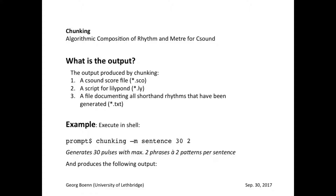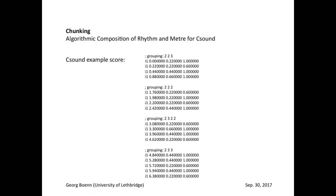Chunking is a command-line application that runs in a shell. It calls its different functions with the option M and further arguments. In this example, sentence is called with two arguments: 30 denotes the length of the complete sentence, whereas 2 denotes the number of phrases or patterns that are being generated. Here are some of the possible outcomes after executing this command.